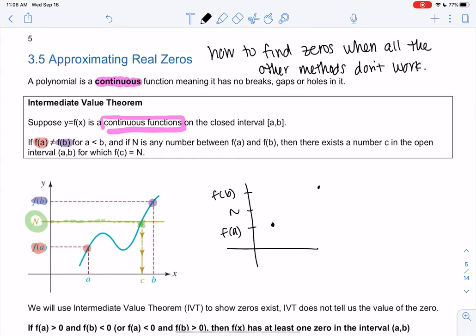There's n in between, right? The graph can't go around. The only way for the graph to get from f(a) to f(b) is it has to cross n at some point. It could cross it multiple times, but it has to cross n.